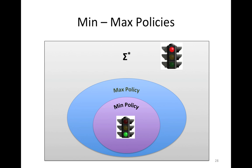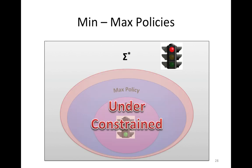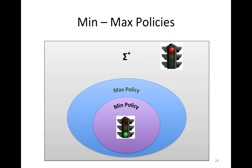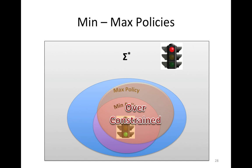Given these two policies, we check if the function conforms to the maximum policy. If it doesn't — if it accepts and returns strings outside of the maximum policy — then we say that the function is under-constrained, because the function accepts and returns things that it should not. On the other hand, given the minimum policy, if the function doesn't conform, meaning there are strings in the minimum policy that the function rejects, then we say the function is over-constrained.